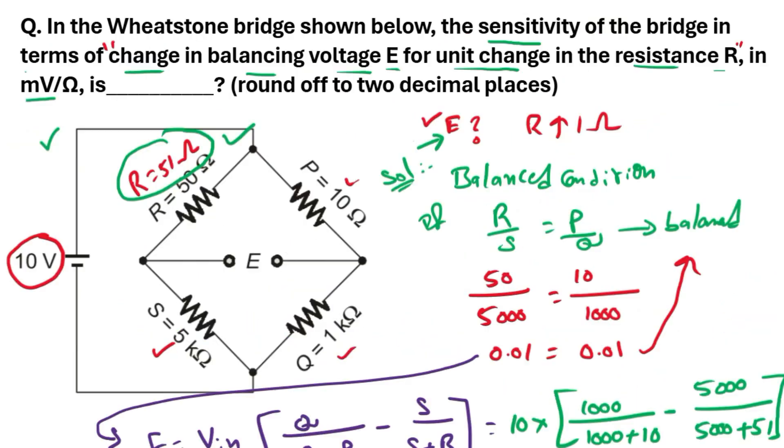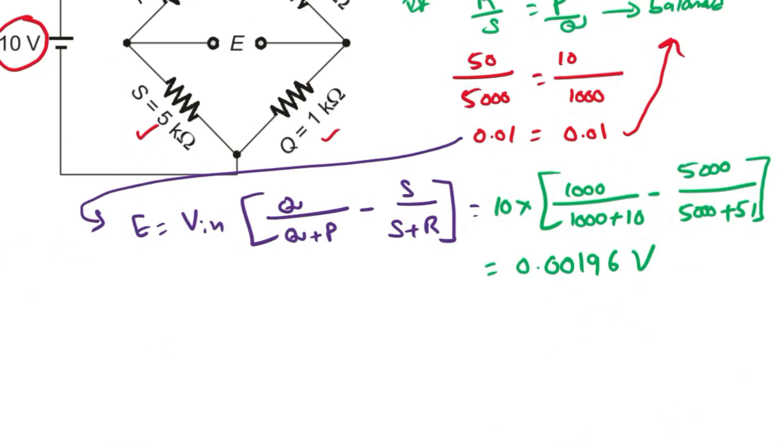But in the question, they ask us to find out in terms of millivolt per ohms. So that's why change it into millivolts, then it will be 1.96 millivolts. Finally, we need to find out the sensitivity.